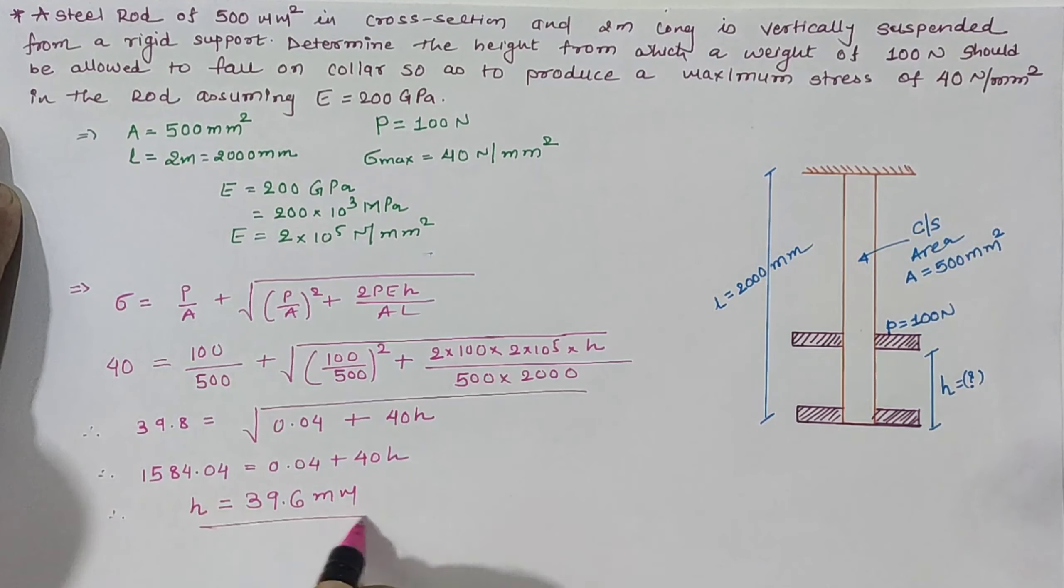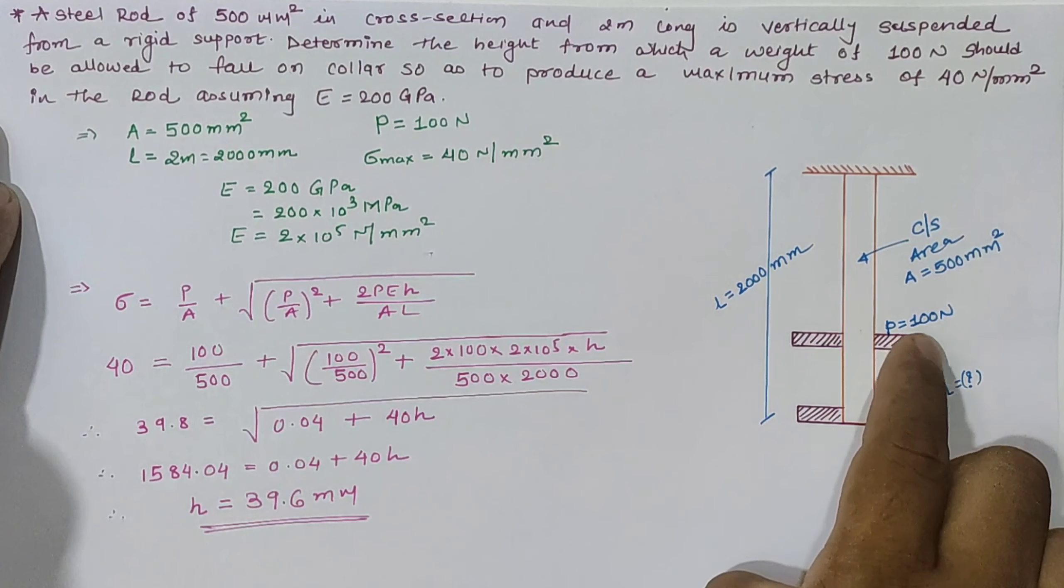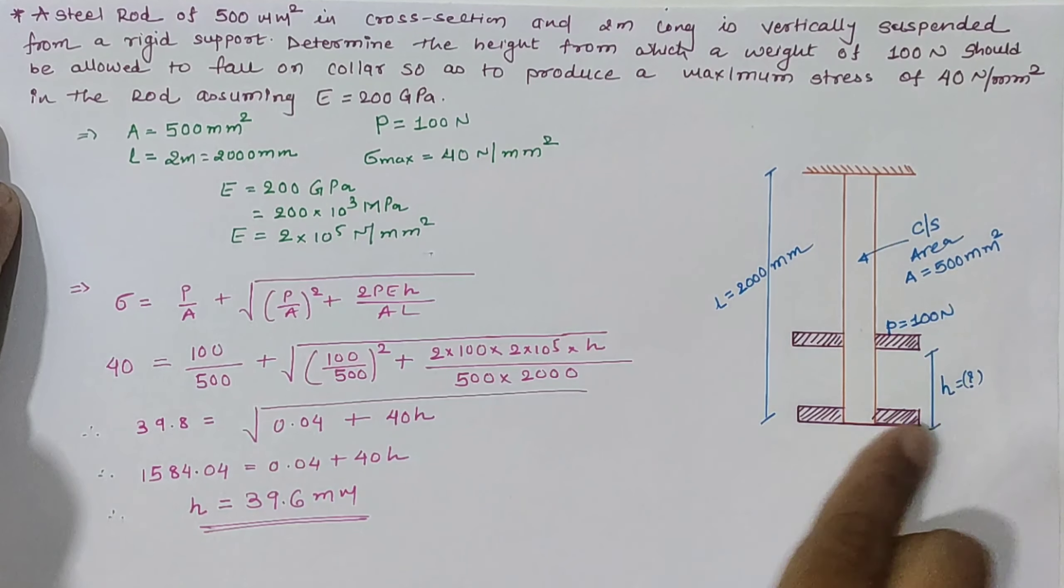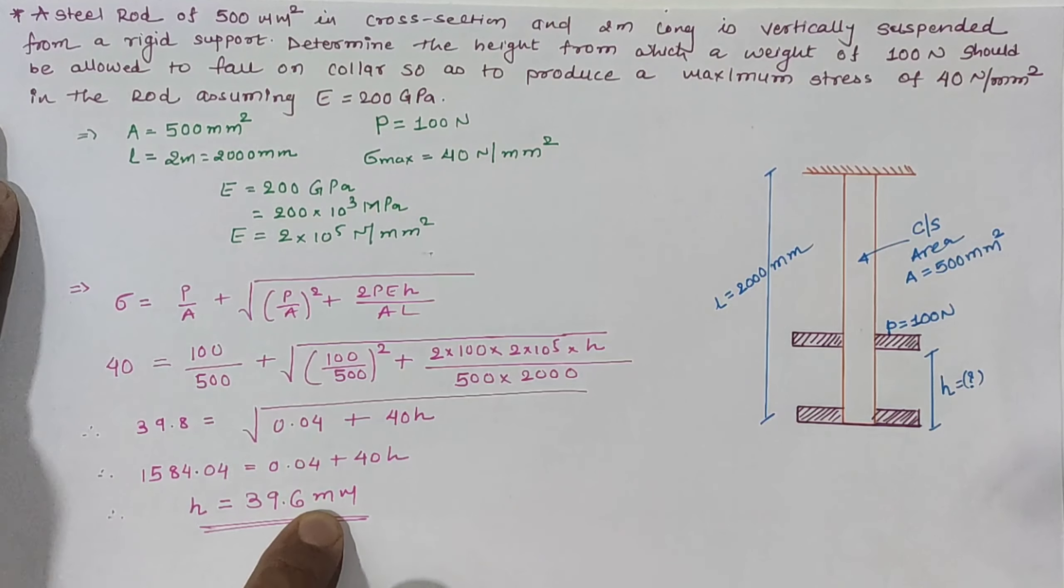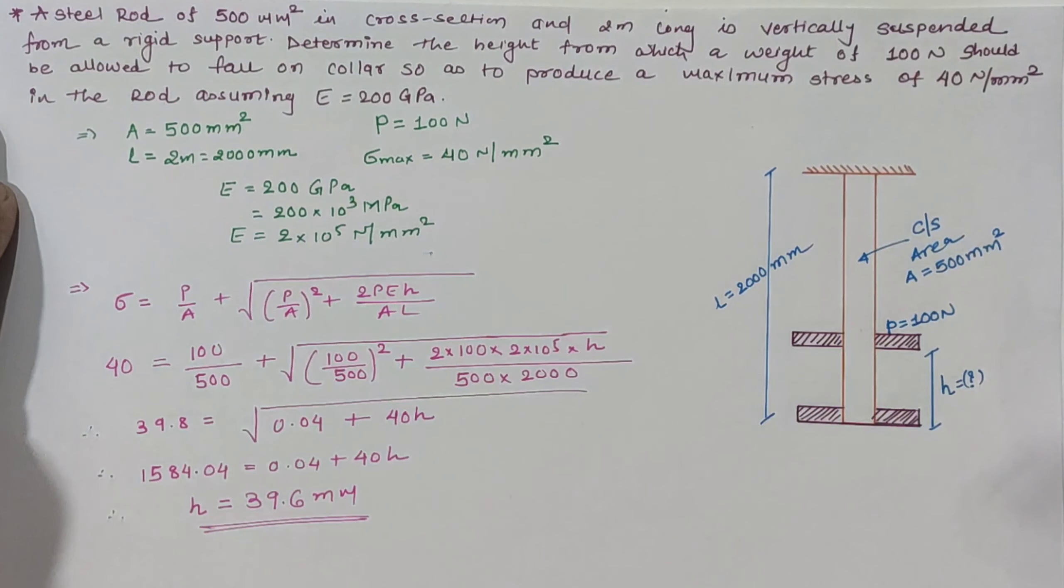So to produce 40 N/mm² stress, the weight of 100 Newton must fall through a height of 39.6 mm as shown in the figure. Thank you.